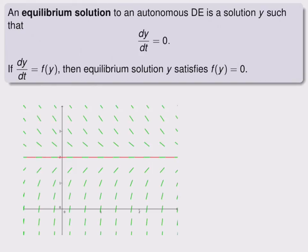The red line on this slope field is an equilibrium solution, and we can see that it never changes as it goes across the graph. So an equilibrium solution is a constant solution, a horizontal line.